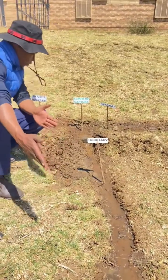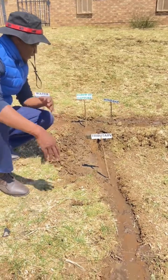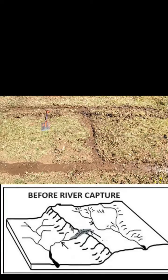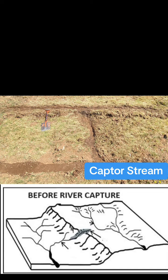But how can one river steal water from another river? Before I explain any further, this is the simulation of river capture before it happens. The river on top is going to form part of the captured river, which is the river whose water will be stolen. The bottom river will be the captor stream, which is the river that will steal water from another river.